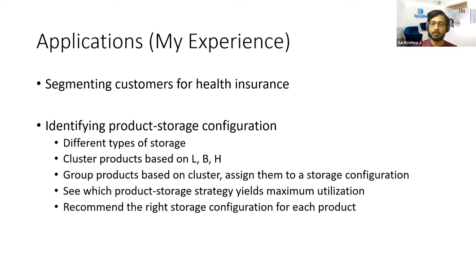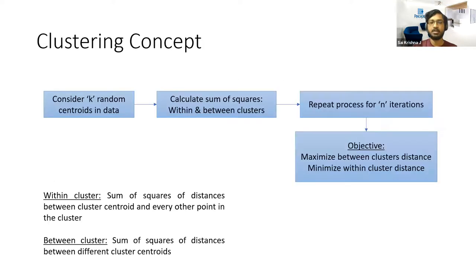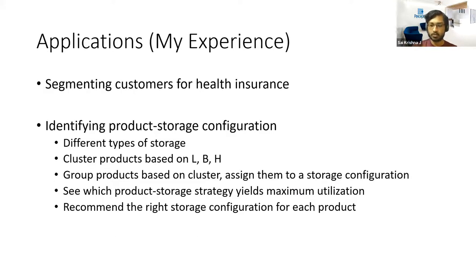We identified which storage strategy yielded maximum utilization and recommended the right storage configuration for each product — if it's a mobile phone, store it in a rack of this dimension; if it's shoes, in this other dimension. The concept is that when you have crores of units of inventory, you optimize your space: a storage configuration works best when most products inside have similar length, breadth, and height. Clustering those products by dimensions means more products can be stored within a given rack or pallet, improving utilization.